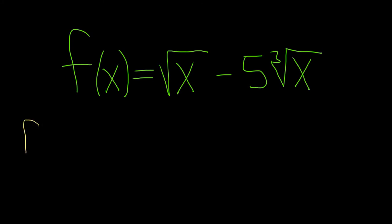So f of x is equal to... The way to do that is to realize that there is an invisible 2 here and there is a 1 here. It's always this number over this number. So it will be x to the 1 over 2 minus 5x. And then here it will be 1 over 3, so x to the 1 over 3.